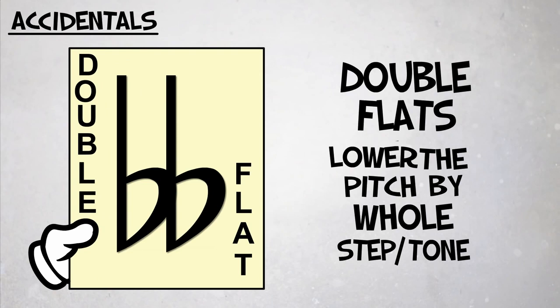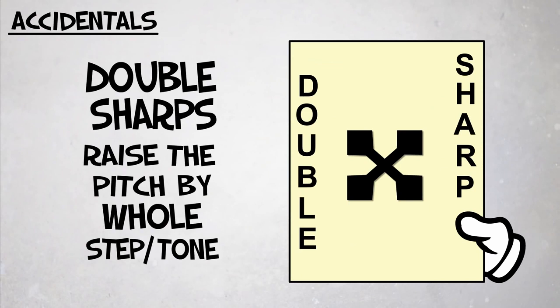Naturals cancel out any sharps or flats. Double sharps and flats lower or raise the pitch by a whole step.